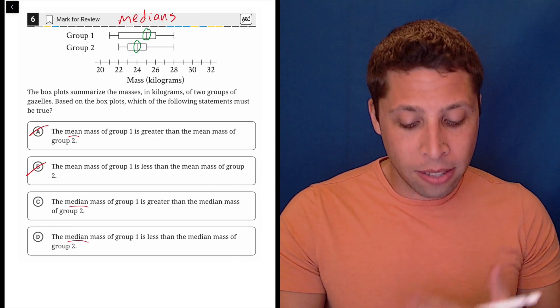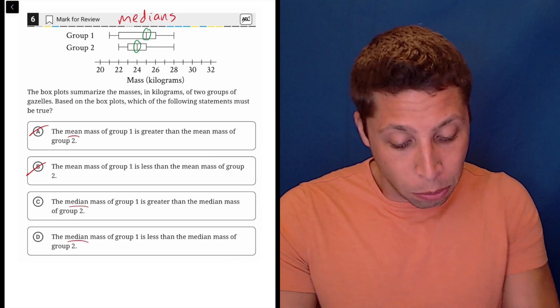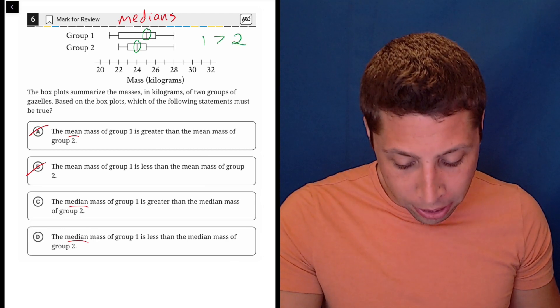So the middle is further to the right, bigger for group one than group two. So the median of one is greater than the median of two. Let's see if there's an answer choice that matches that.